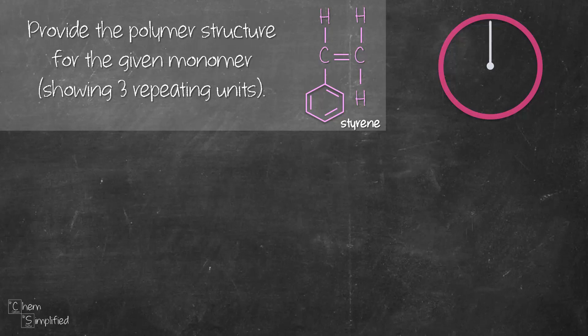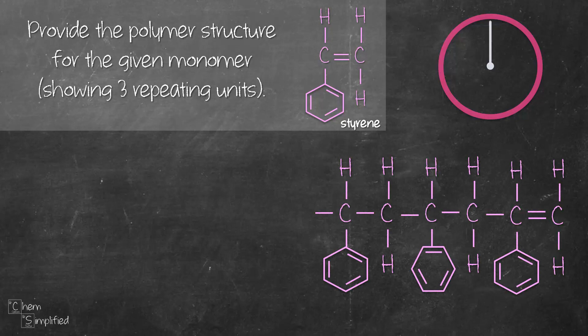Here's the question — we need to provide the structure of the polymer formed from the given monomer. In fact, the polymer we're asked to draw is polystyrene, a material usually used in packing and insulation. The monomer given is called styrene. Here's the given answer — you have one minute to spot as many errors as you can.